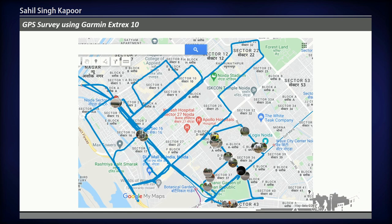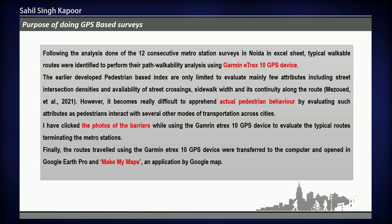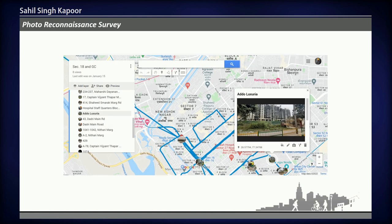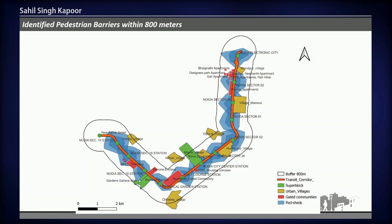This is the Garmin e-trex 10 device-based survey. By using the Garmin e-trex 10 device I have been able to photograph the actual pedestrian barriers found on typical pedestrian routes taken to reach the nearest metro station. An origin-destination matrix was developed based on the survey, and I identified typical pedestrian routes. I then used the Make My Trip app, a Google Maps application, to show the actual location of photos by geotagging them at approximate locations.